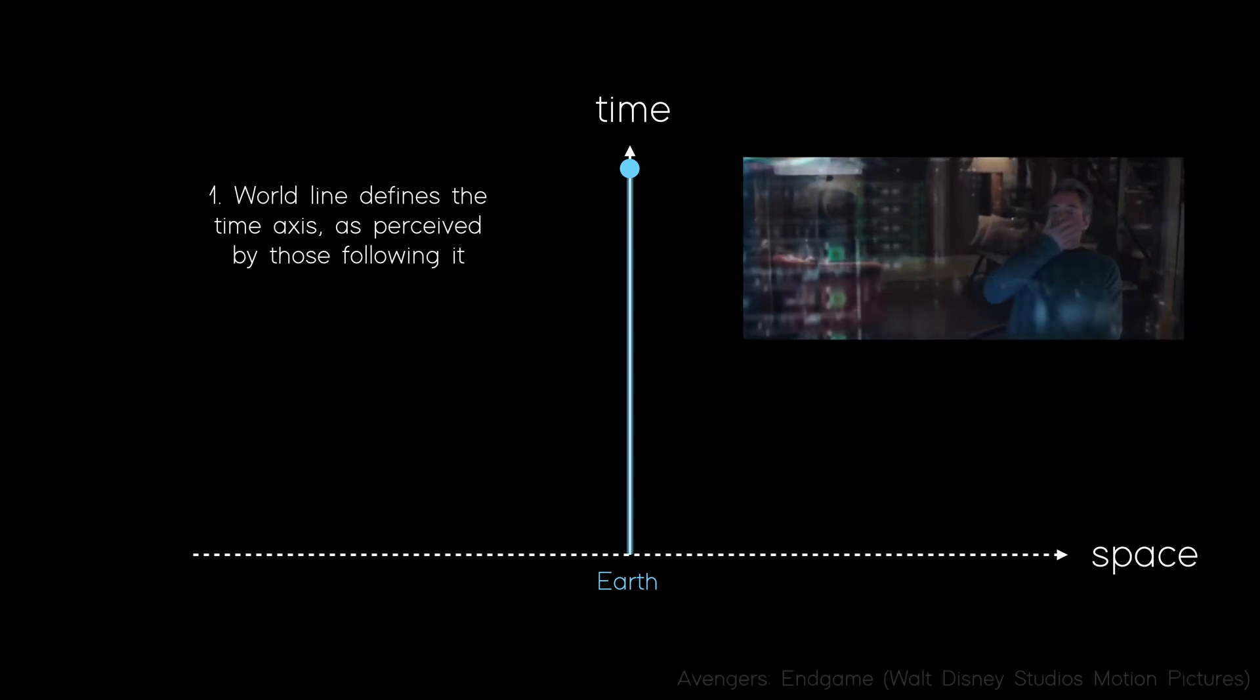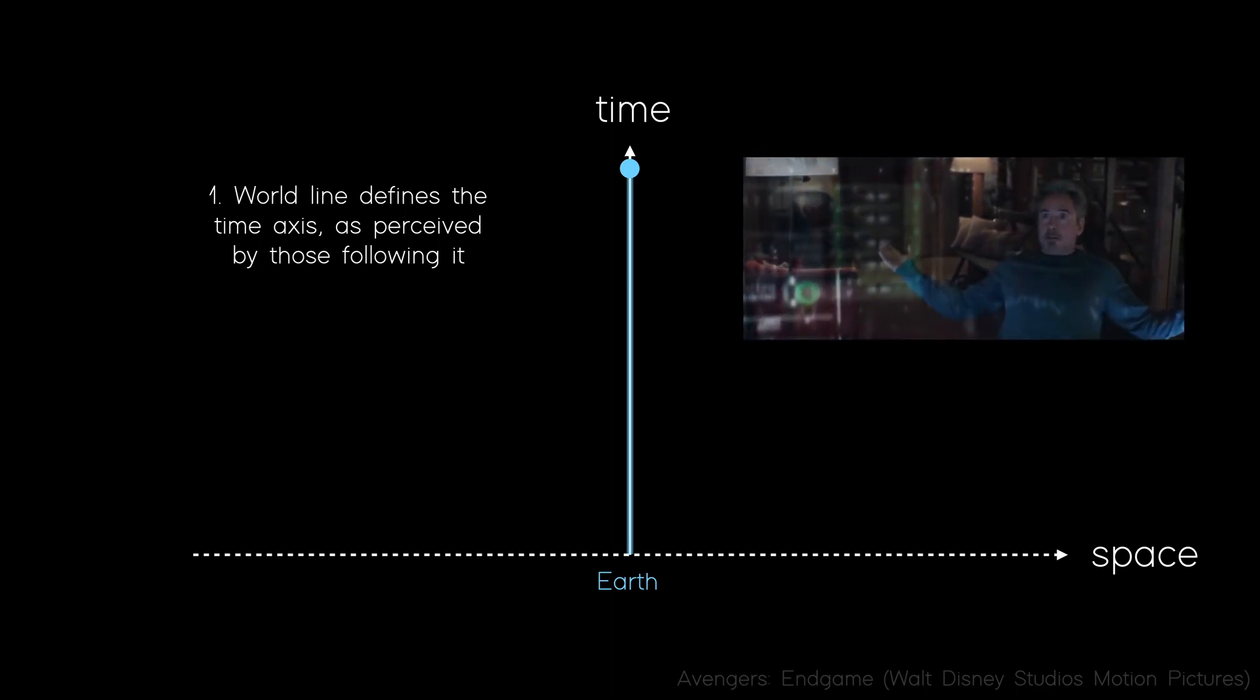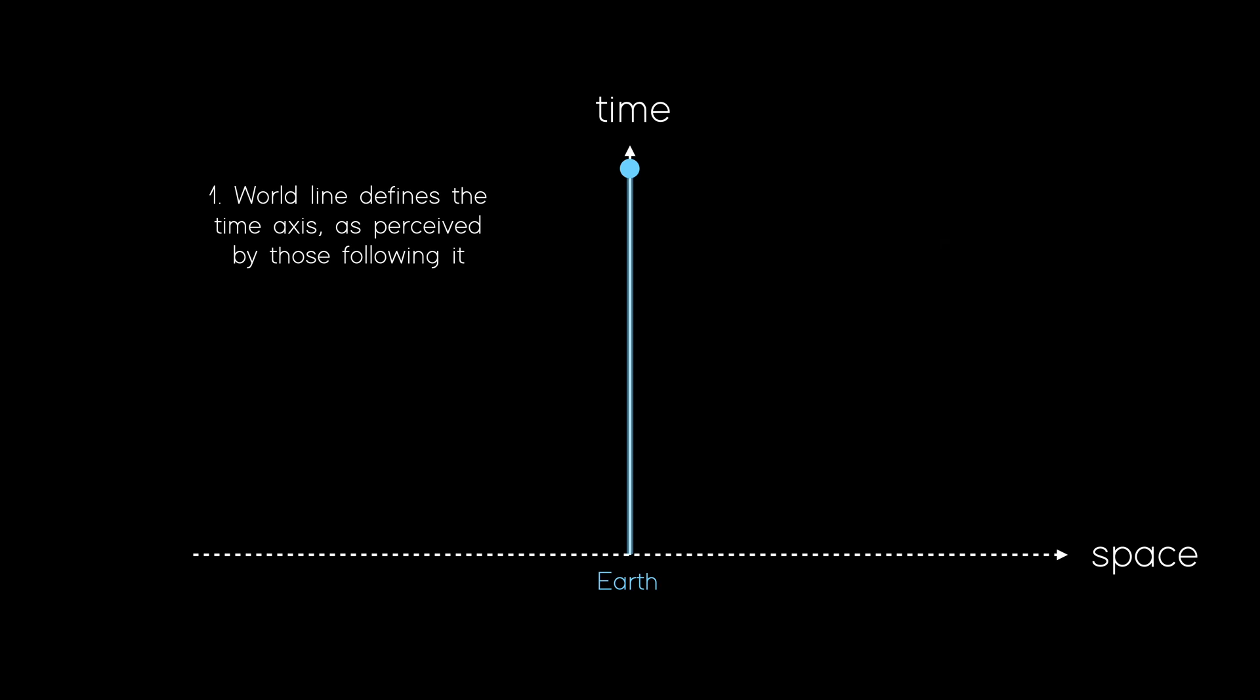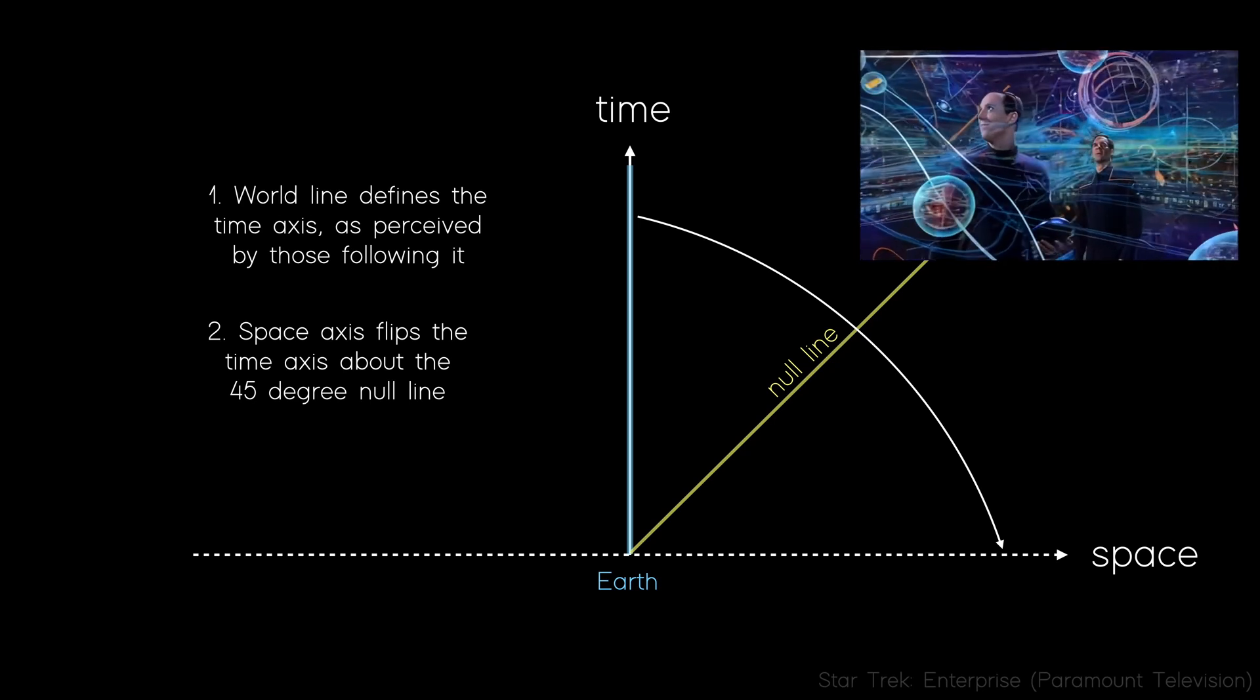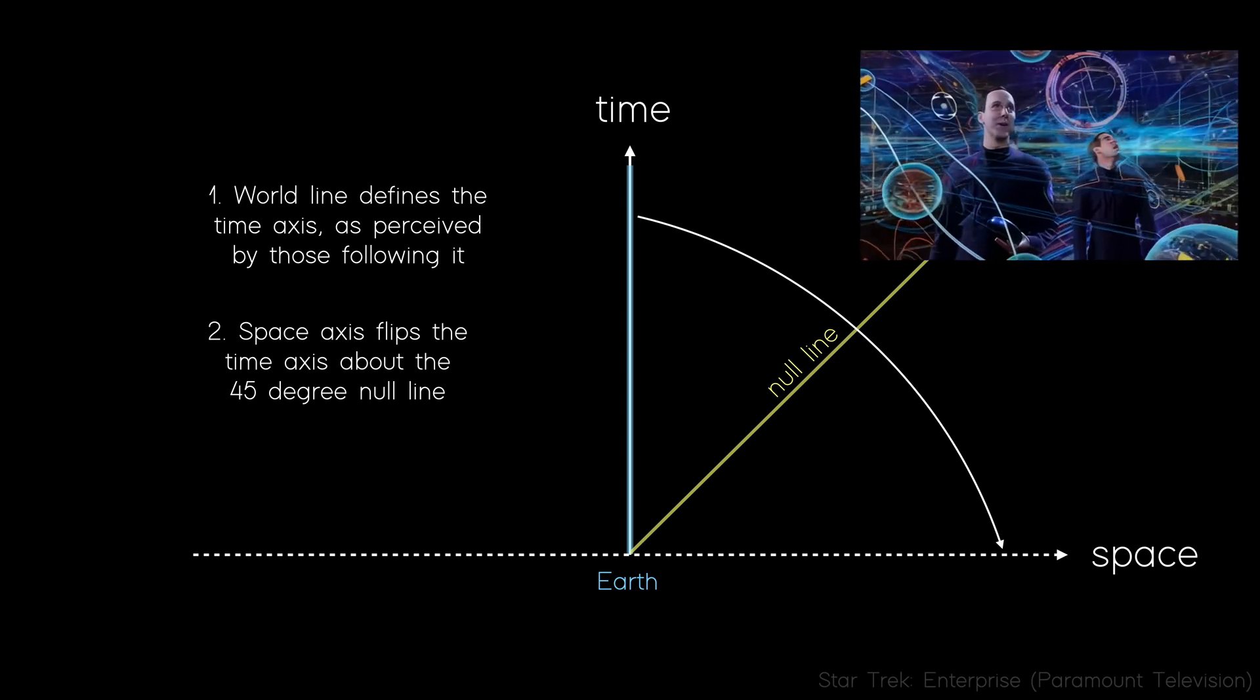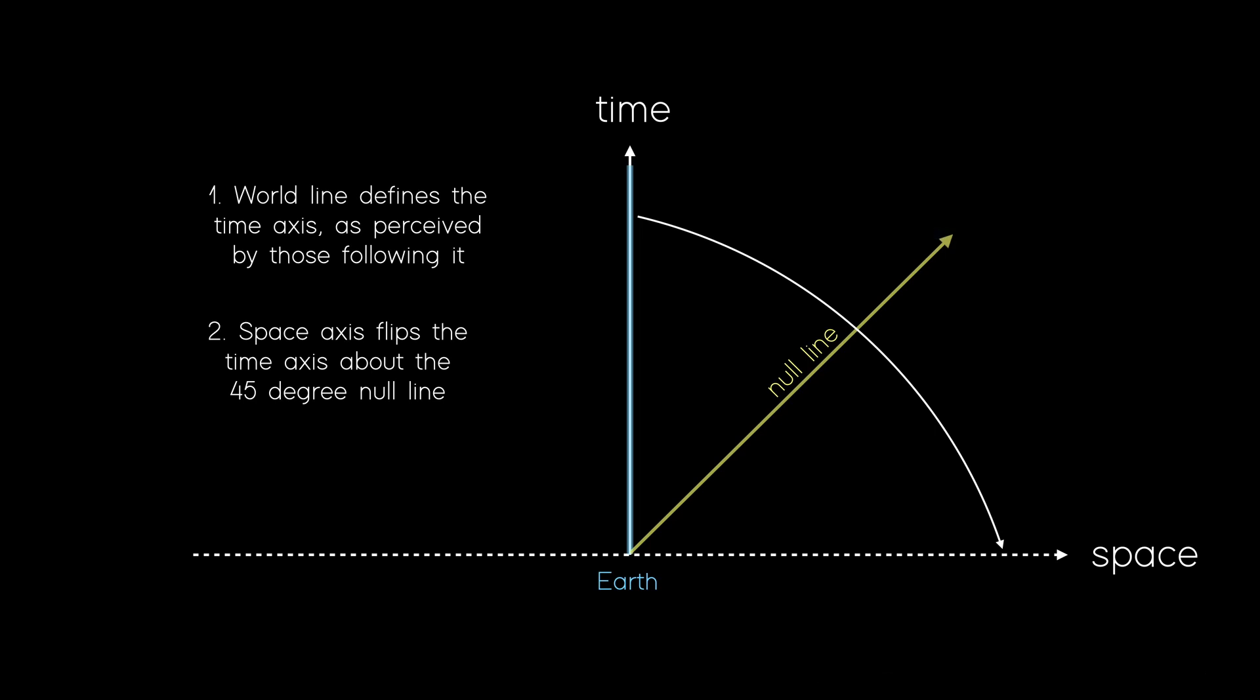This is important, because we all know how relativity screws around with time, but here, there's a clear definition of where the perceived time axis lives. Now, adding the null line back on, we can note the relationship that the space axis is really just a flip of the time axis around the null. So again, this provides a useful rule for orienting ourselves later, when we'll have to deal with more complicated scenarios.